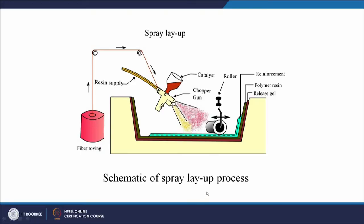On screen you can see a simple diagram of the spray layup process. The mold remains the same. A release gel shown in a different color is sprayed on the inner half of the mold. Then there is a polymer resin and reinforcement coming together, with a roller for consolidation. A catalyst comes from one side and resin through a yellow tube; the catalyst acts as a hardener for the thermoset.